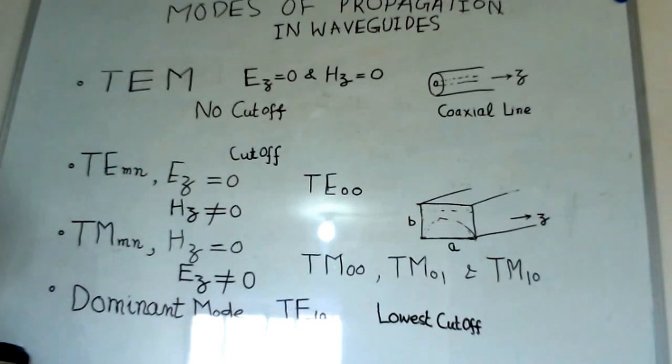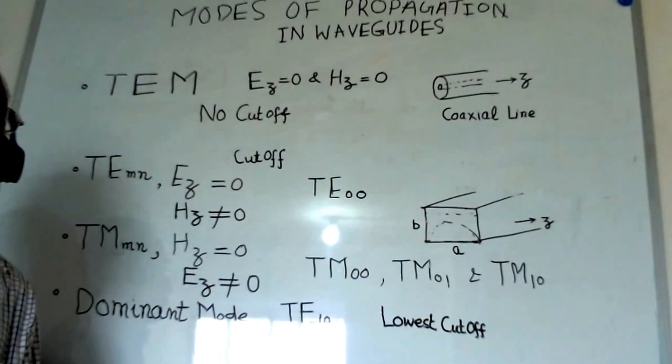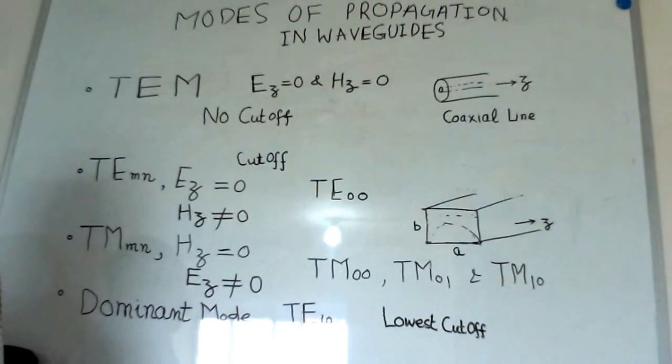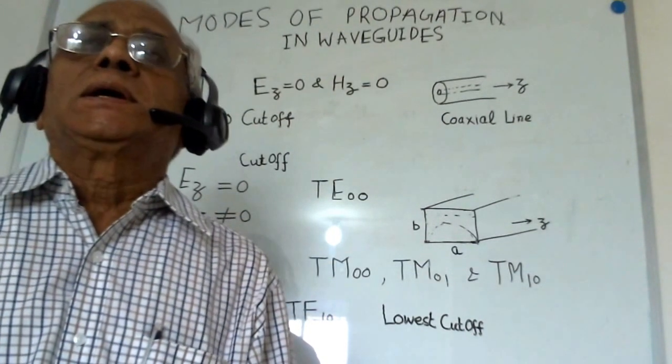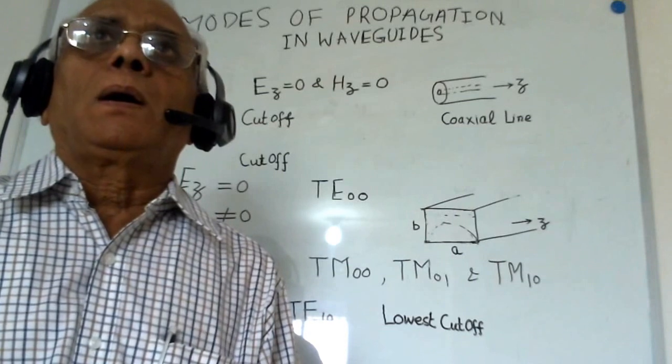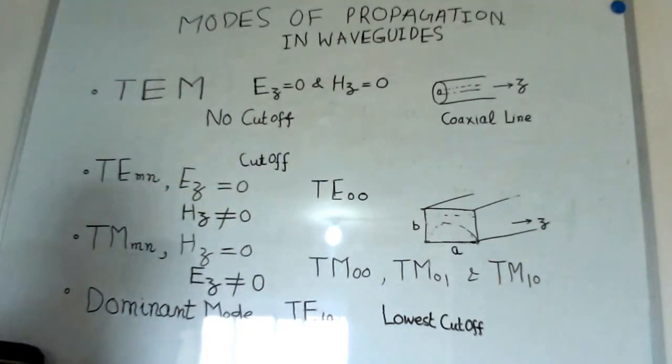We will see both categories of transmission structures. In general, I have given a name like modes of propagation in waveguides. I put the coaxial line, rectangular waveguides, circular waveguides, etc. all in the category of waveguides only, because they are guiding the waves along the line.